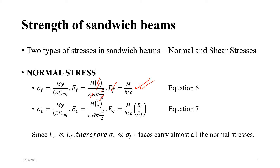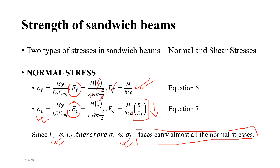For the normal stress on the core, the same expression applies but E_F is replaced with E_C. After cancellation, you get a similar expression. Since the elastic modulus of the core is much, much less compared to the face, this term comes down significantly, meaning sigma_C is much, much less than sigma_F. Therefore, the top and bottom faces carry the maximum normal stresses in a sandwich beam.